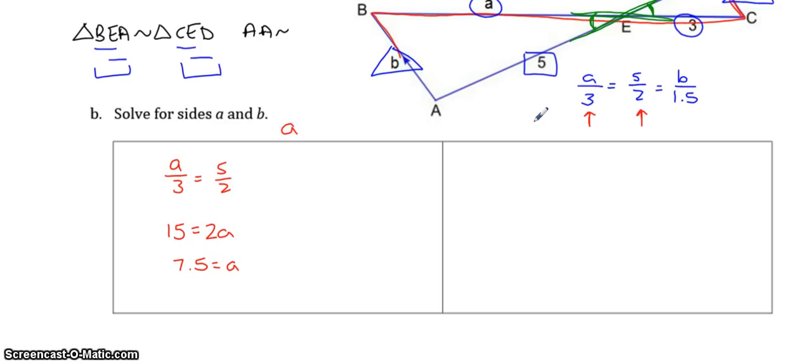To solve for B, cross multiply this one with this one. 5 over 2 equals B over 1.5. Cross multiply, 5 times 1.5 is 7.5, 2 times B is 2B, and when you divide by 2, you get B is equal to 3.75.